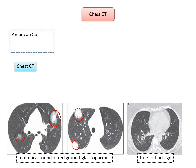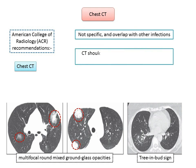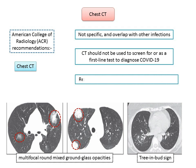According to the American College of Radiology (ACR) recommendations, chest CT is not specific and overlaps with other infections such as influenza and H1N1. Hence, CT should not be used to screen for or as a first-line test to diagnose COVID-19. CT should be used sparingly and reserved for hospitalized symptomatic patients with specific clinical indications.